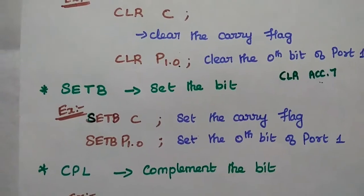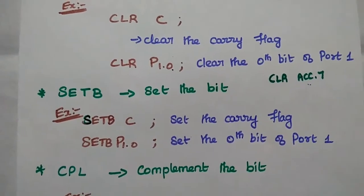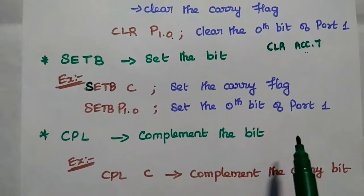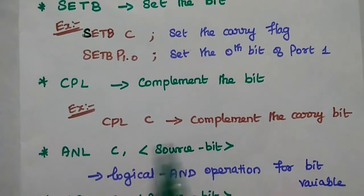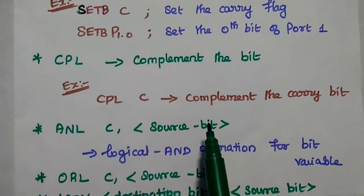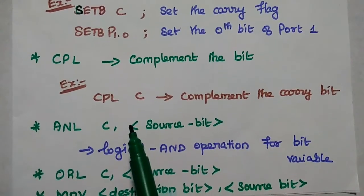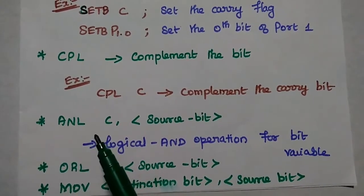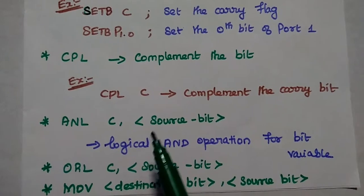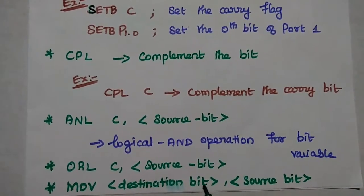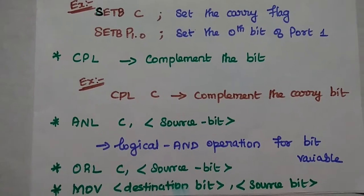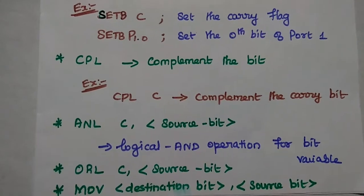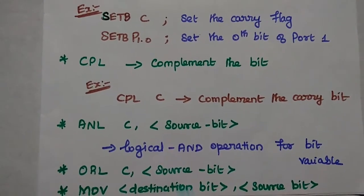The SETB instruction sets a bit to 1. SETB C sets the carry flag, and SETB P1.0 sets the 0th bit of port 1 to 1. CPL C complements the carry flag — if it is 0 it becomes 1, and if it is 1 it becomes 0. We can also perform logical AND and logical OR operations at bit level, and move data between bits using MOV destination bit, source bit. These are the bit level logical instructions.